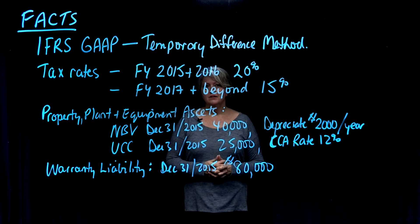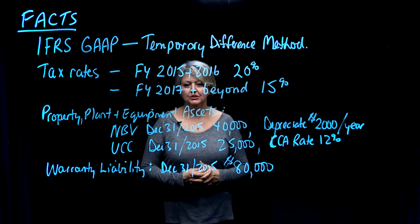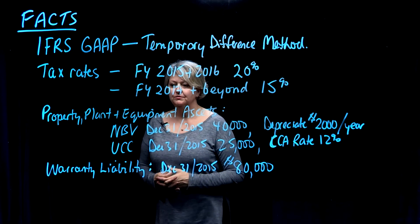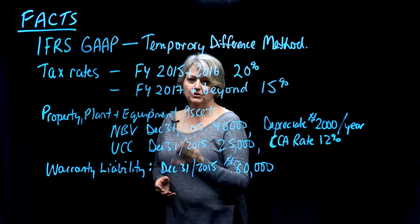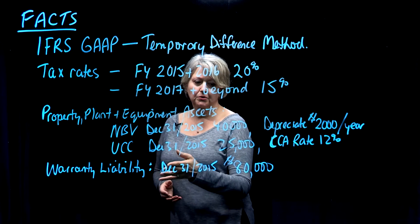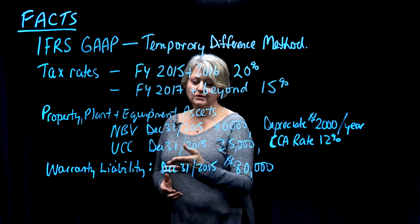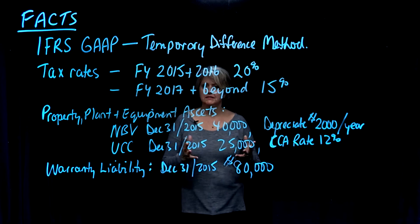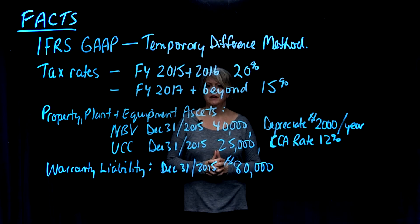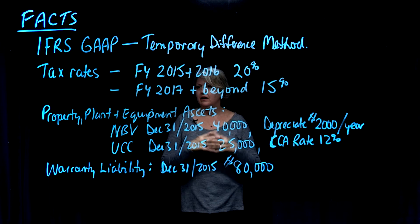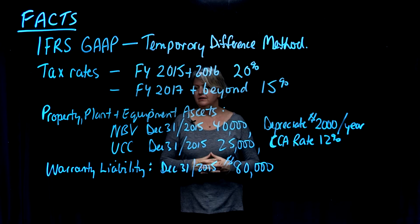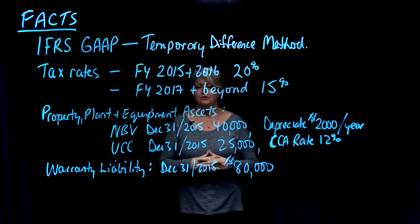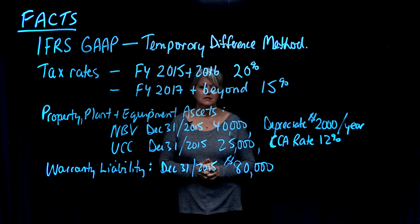The other relevant fact for this tax accounting situation is that at the end of last year, December 2015, there was a warranty liability that had been accrued but not yet spent of $80,000. These tax facts are all based on the Canadian Tax Act as it stands in 2016.